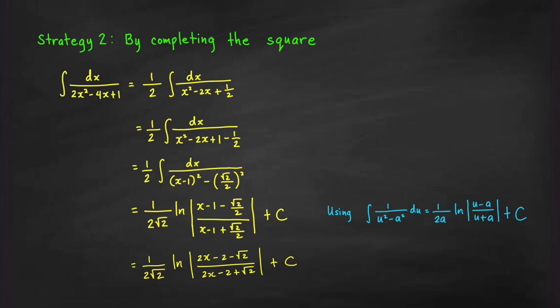Using the formula ∫ du/(u² − a²) = (1/2a) ln|( u − a)/(u + a)| + C, with a = √2/2 so 2a = √2, we get (1/2) · (1/√2) ln|(x − 1 − √2/2) / (x − 1 + √2/2)| + C = (1/(2√2)) ln of that expression plus C, which matches the result from the previous method.